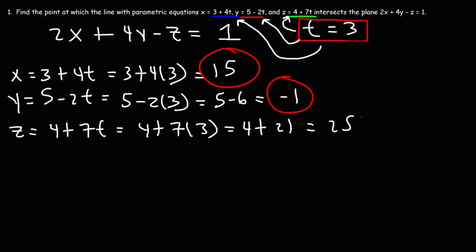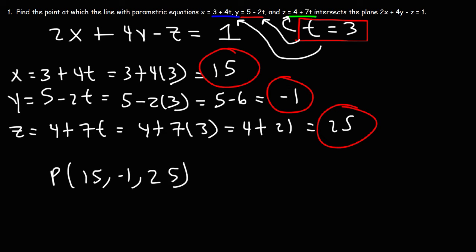So we have x, y, and z. The answer is going to be (15, -1, 25). This is the point of intersection between the line and the plane. Now let's move on to the second type of problem: at what point does the line that passes through (2, 1, 3) and (5, 2, 1) intersect the plane x minus 3y minus 5z equals 4? This problem is a little different, but if we can find the parametric equations of the line, then we can do what we did in problem 1.